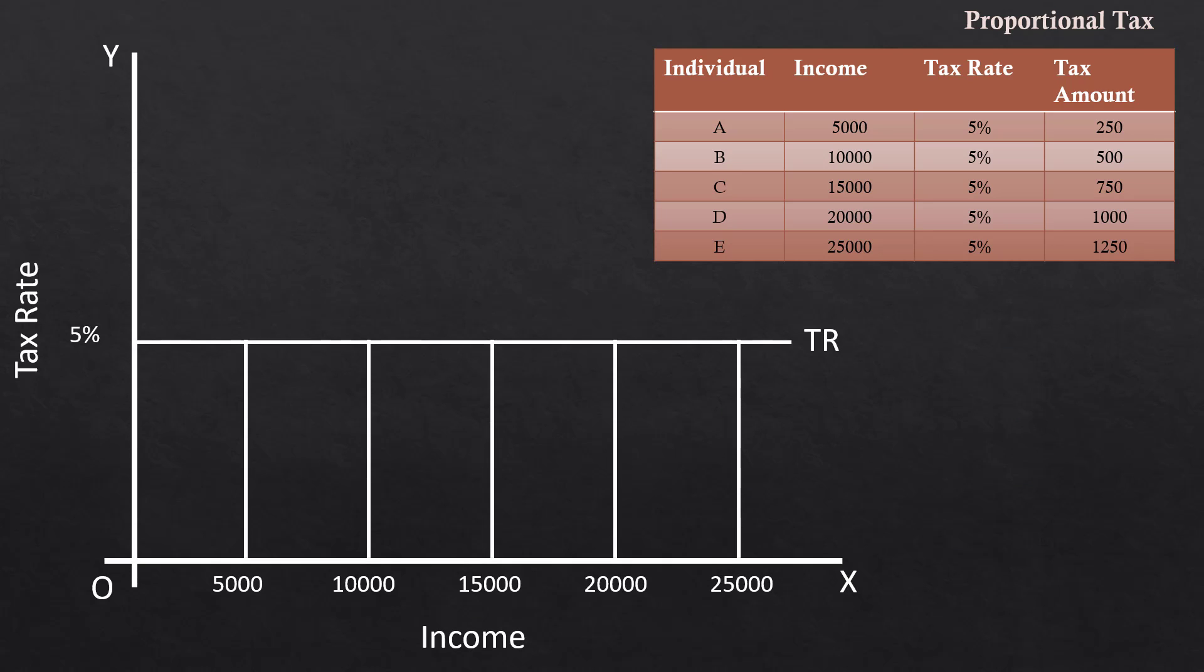The relation between tax rate and the income can be shown in the form of graph. The TR is the tax rate curve. It shows that tax rate is the same for all ranges of income. The curve is parallel to X-axis.